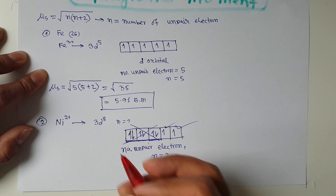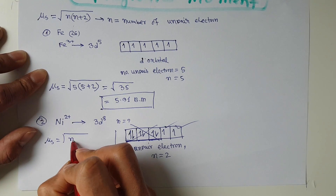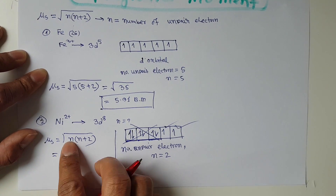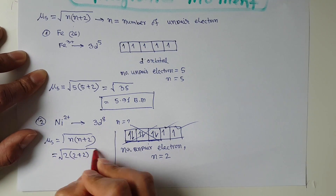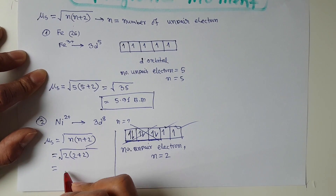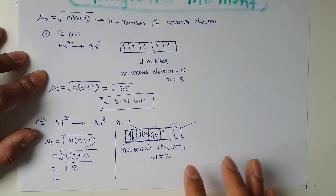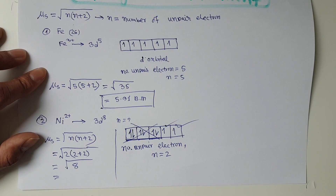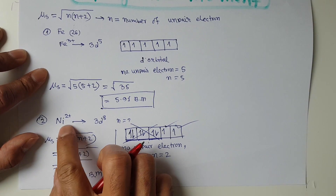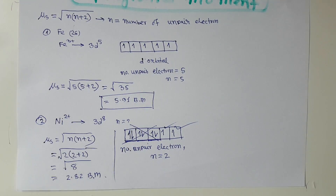Now we can calculate the spin-only magnetic moment for Ni²⁺. μs = √(n(n+2)) with n = 2, so μs = √(2 × 4) = √8. Using a calculator, √8 = 2.82 Bohr magnetons. That means the Ni²⁺ ion has a spin-only magnetic moment of 2.82 BM.